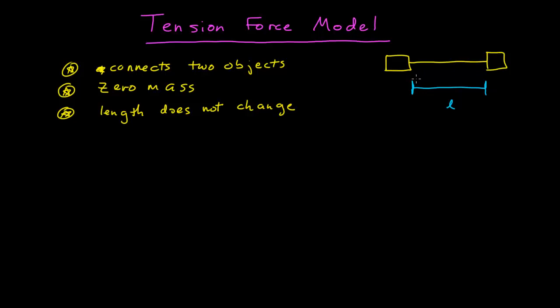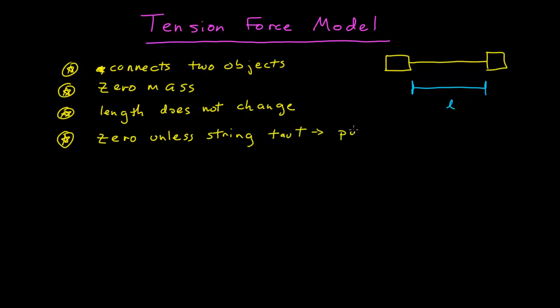That's a simplification — in real life, when a string becomes taut it will stretch a little bit, but we're going to assume at this stage that that is negligible, so the length doesn't change. The other aspect of the tension force model is that the force is zero unless the string — and when I say string I mean any sort of rope or cable or similar object — is taut. Which means it is a pulling force. It pulls, never pushes.